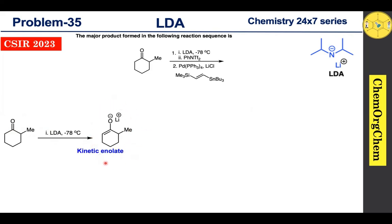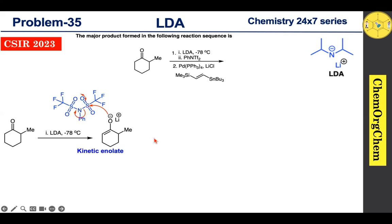This kinetic enolate ion readily reacts with bis-trifluoromethanesulfonyl aniline, which acts as a triflating agent. The O-negative charge quickly attacks the sulfur atom, then the pi electrons move towards the oxygen, followed by movement towards the sulfur, which leads to cleavage of the sulfur-nitrogen bond to produce the triflate product.